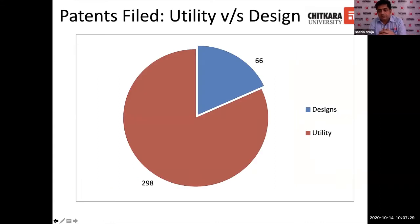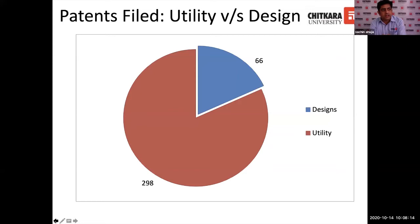This is an interesting comparison between the designs filed and utility patents. Out of 364 patents, we have filed only 66 designs and 298 utility patents. The topic of this presentation is filing designs and putting an IP under your name in an easy way — filing a design is very easy, less time consuming, and less costly.